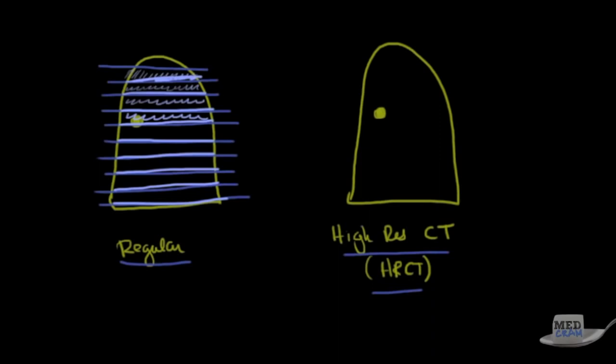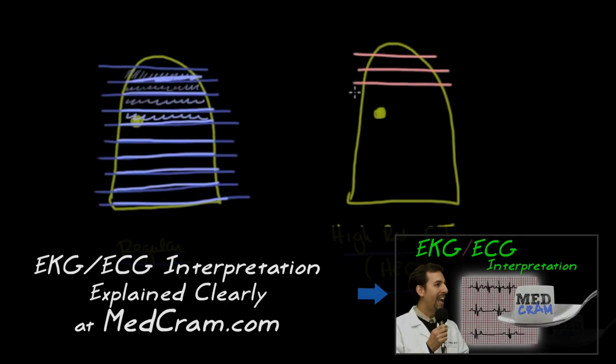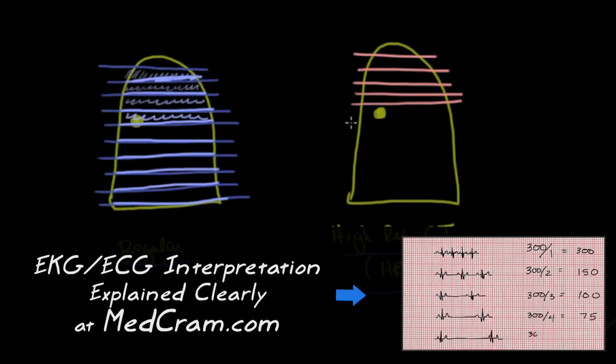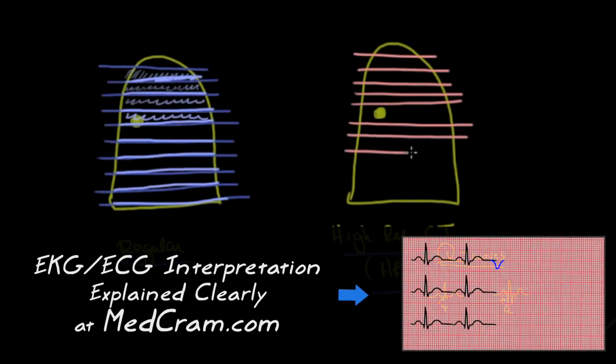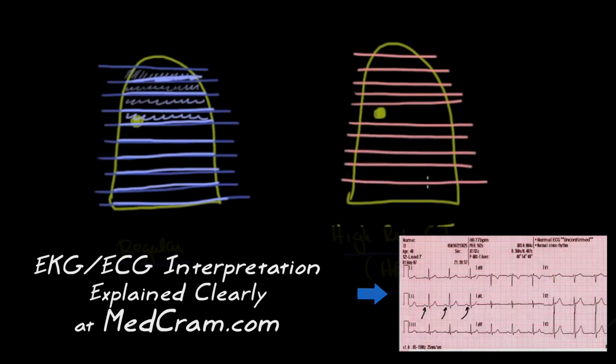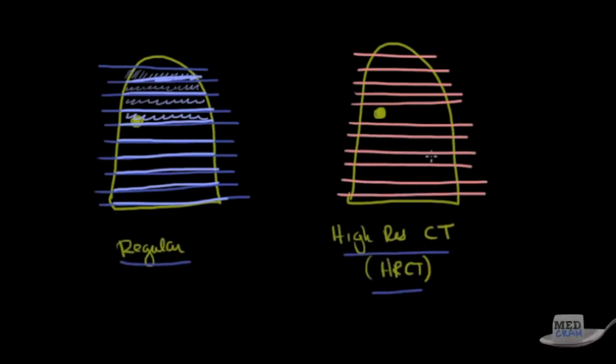That's different than a high-resolution CT scan. Here you still get cuts, but these cuts don't volume average. You're actually getting the image from that area, and all of the space in between those cuts is never really imaged.